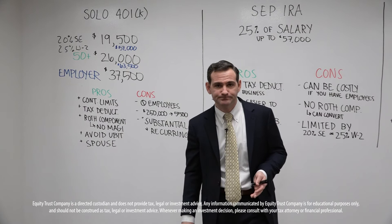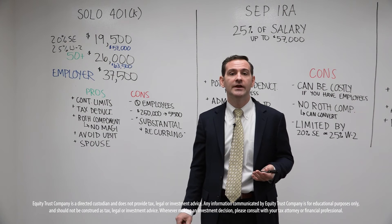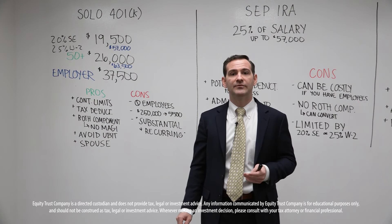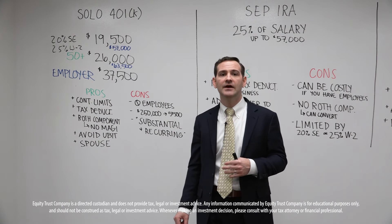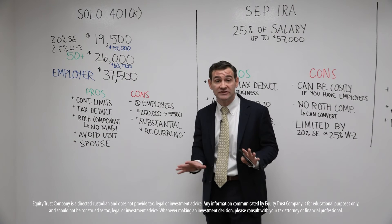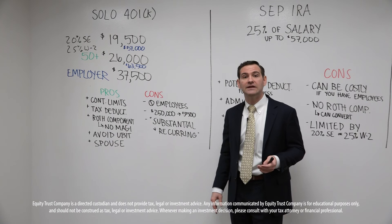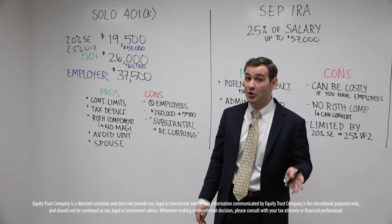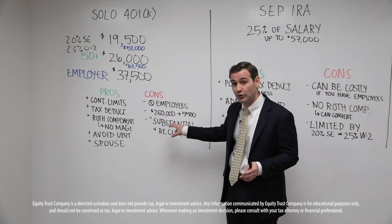Next: substantial and recurring contributions. I've heard investors say they have a solo 401k but have never had active earned income through a business, and the company that set it up told them they didn't need earned income — just the intent to make contributions. Directly from the IRS website, it states that contributions must be substantial and recurring. If you set up a solo 401k, never make a contribution, and don't even have earned income through that business, you have not met the substantial and recurring contribution requirement. Check with your CPA or tax attorney on this.